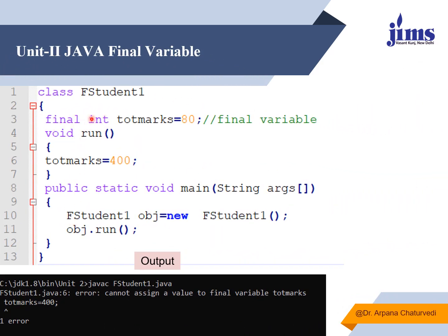For example, in a class I have one final variable named total marks, initialized to 80. I have used the final keyword here. Now I have one function where I am re-initializing the value of the variable to 400. If you run this program, you will see an error: "cannot assign a value to final variable."